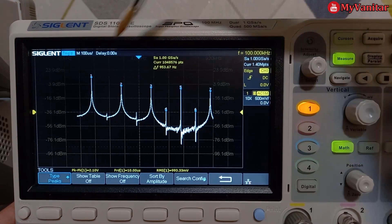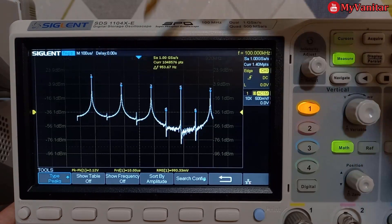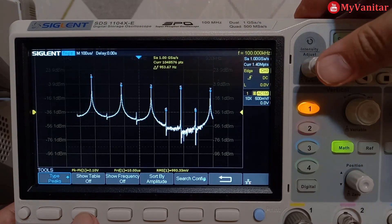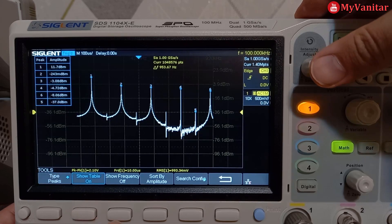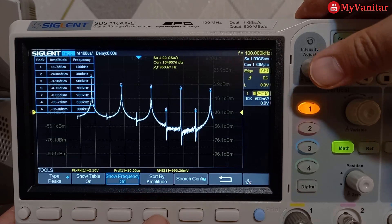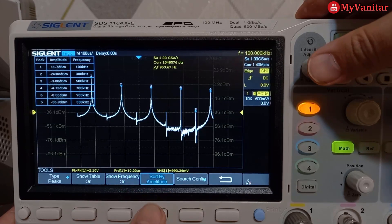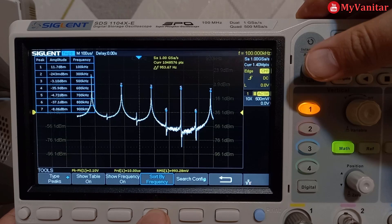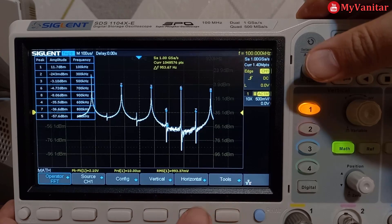And there we go. The device automatically detected the amplitude peaks, show table on, show frequency on. And I prefer sort by frequency. I sort by amplitude. You have options, sort by frequency. I prefer amplitude.